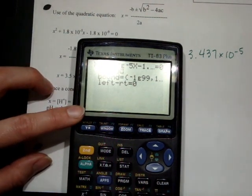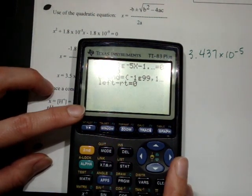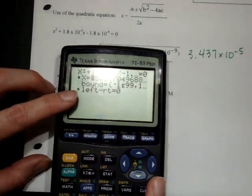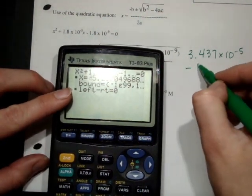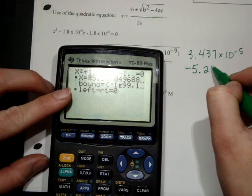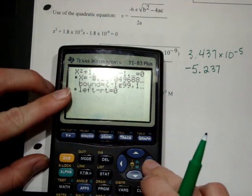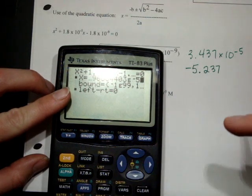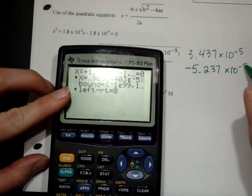For the upper bound, hit clear. Now you'll have X equals 100. Again, do alpha solve. That should give you your other X value, which is negative 5.237. I'm going to scroll all the way to the right. Times 10⁻⁵.